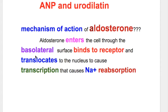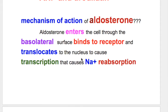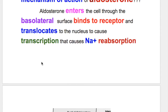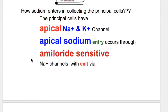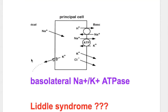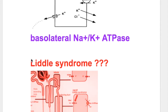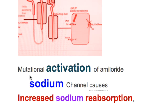Aldosterone enters the cell through the basolateral surface, binds to a receptor, and translocates to the nucleus to cause transcription, resulting in sodium reabsorption. Principal cells have apical sodium and potassium channels — sodium entry occurs through amiloride-sensitive sodium channels (ENaC), with exit via basolateral sodium-potassium ATPase.